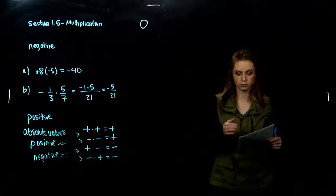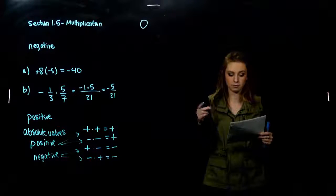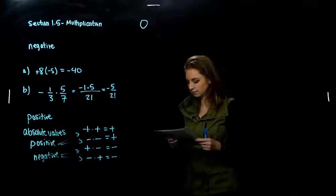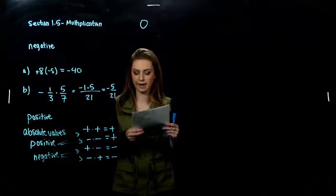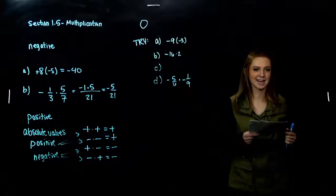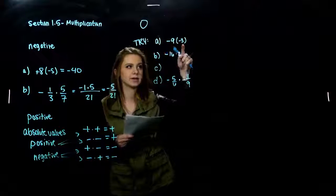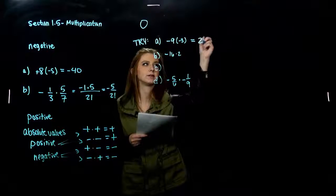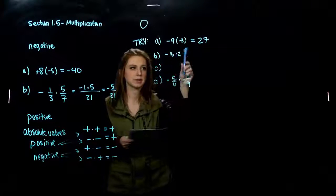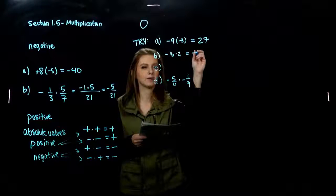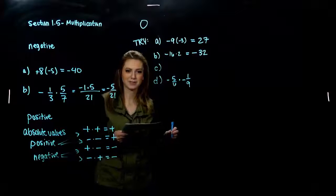Try those four examples. For A: negative times a negative gives us a positive — twenty-seven. For B: negative times a positive, so our answer should be negative — sixteen times sixteen is thirty-two.